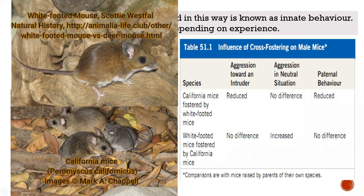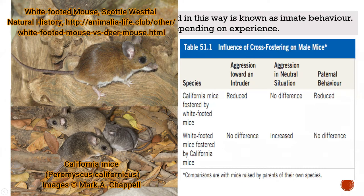We have the example of Californian mice fostered by white-footed mice, and white-footed mice fostered by Californian mice. Both mice were raised under the parental care of different mothers. If we look at the aggressiveness of young ones towards an intruder, there is reduced aggression in Californian mice fostered by white-footed mice. In the reverse case, aggression is neutral — there is no difference.